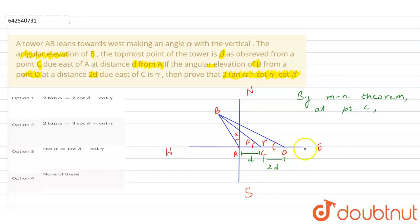In this case, M would be D and N would be 2D. So we can write as M plus N cot beta equals M cot gamma minus N cot 90 plus alpha, that is this angle.